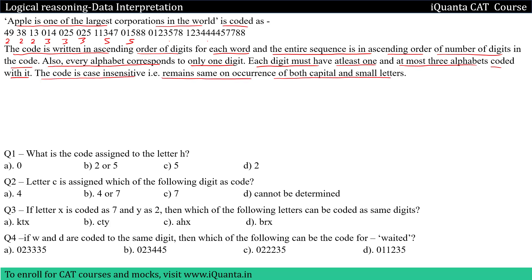The first question is: what is the code assigned to the letter H? Basically we are trying to find out a digit and the alphabets under it. The second question: letter C is assigned to which of the following digit as code? Third: if letter X is coded as seven and Y as two, then which of the following letters can be coded as the same digit? So let us start comparing.